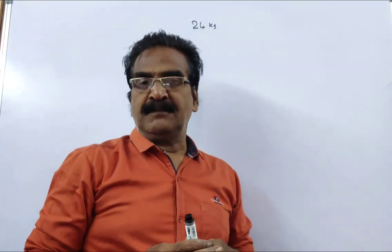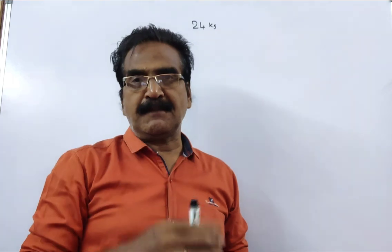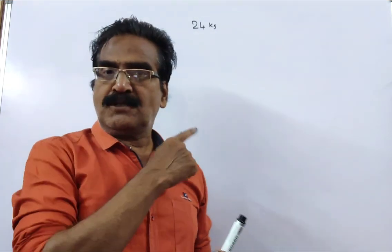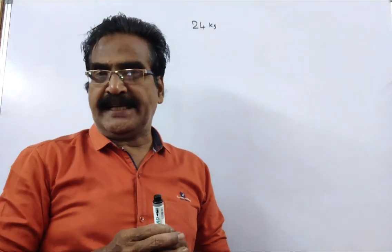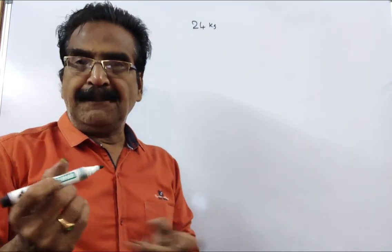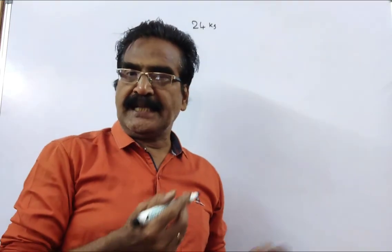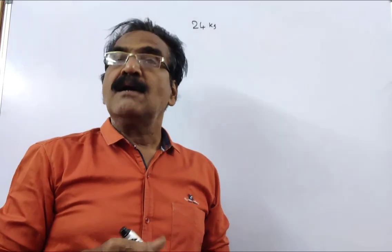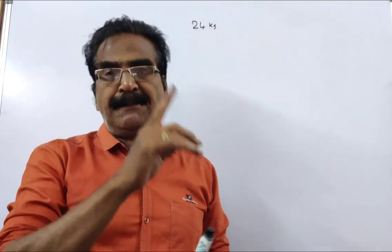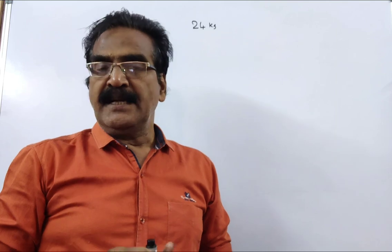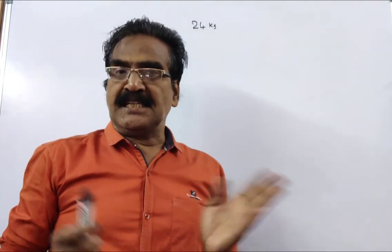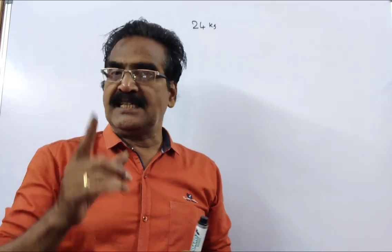Hi friends, good morning. Please look at the next problem in allegation mixtures. The problem is given in the description box. A shopkeeper has to sell 24 kg of sugar, part of which he sold at a loss of 5% and the remaining at a profit of 20%, and on the whole he gets a profit of 10%. The question is: what is the quantity that is sold at a loss?